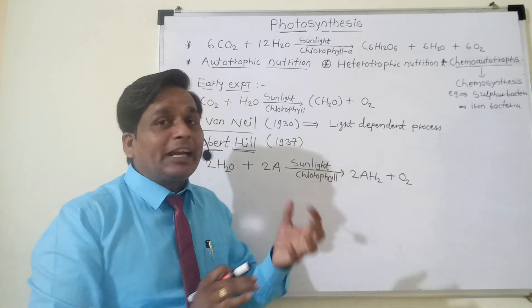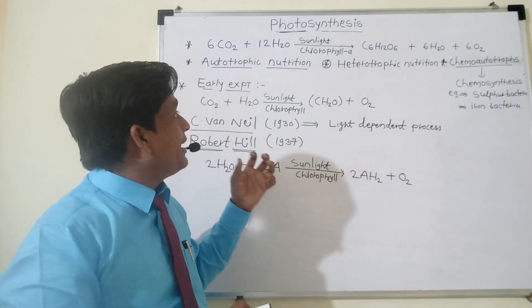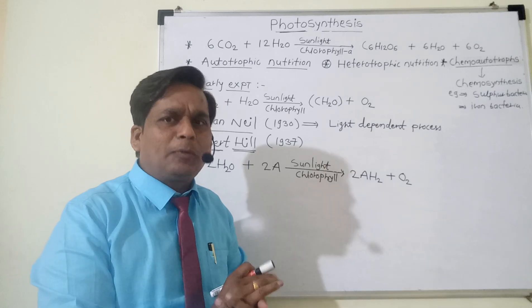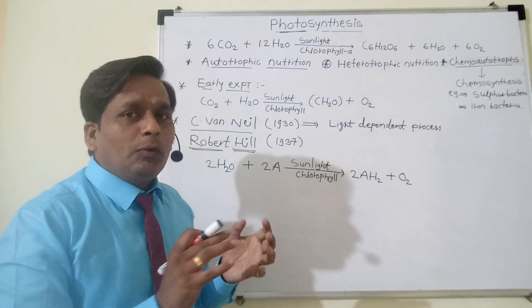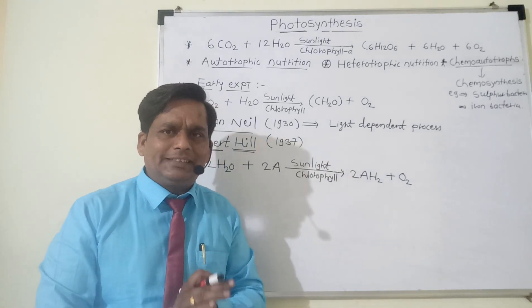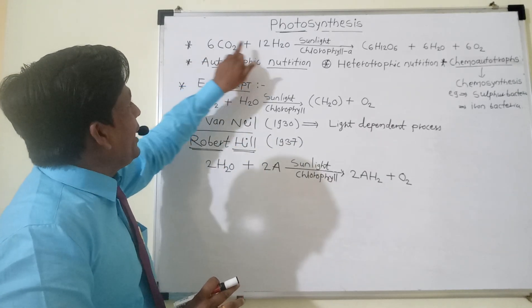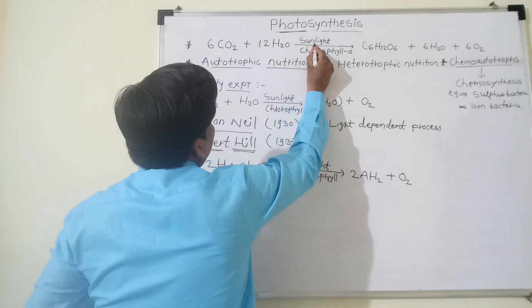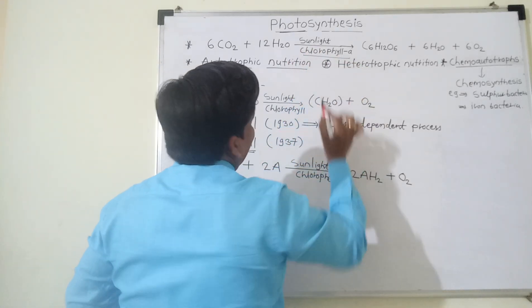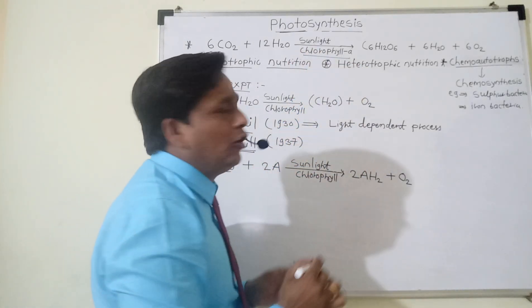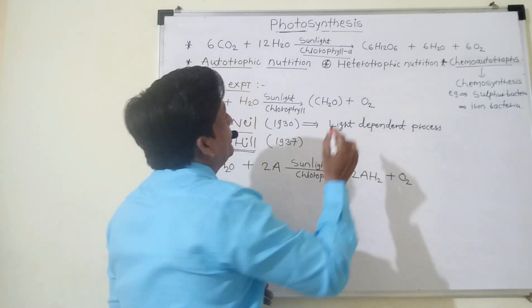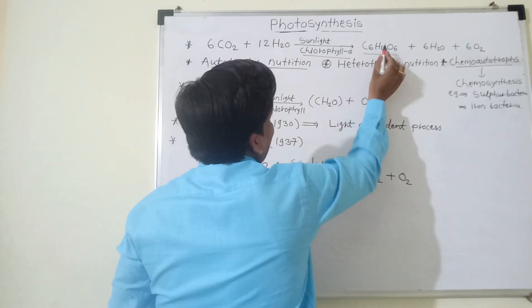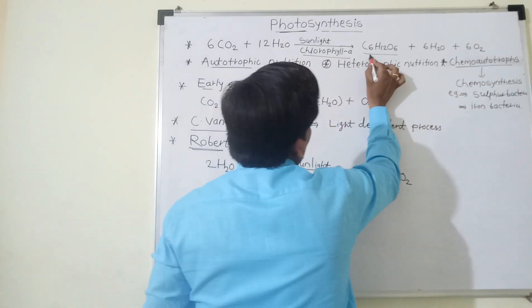Chlorophyll can absorb sunlight, so this reaction always takes place in the presence of sunlight — this is a light-dependent process. Now let's see the equation of photosynthesis. CO2 and water molecules react together in the presence of sunlight and chlorophyll A, which is the photosynthetic pigment, to form glucose or carbohydrates. C6H12O6 is the structure of glucose.